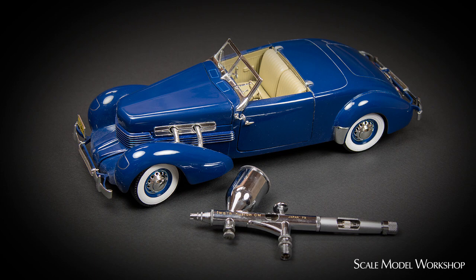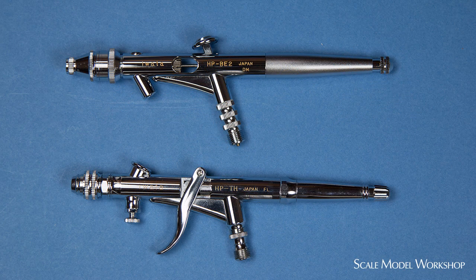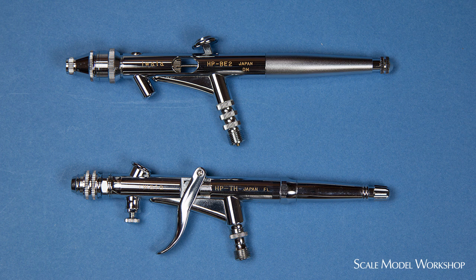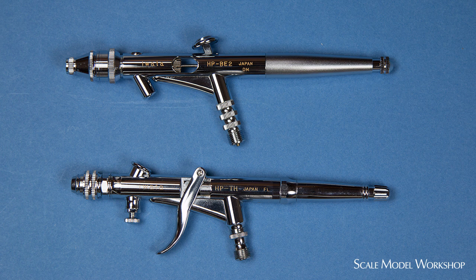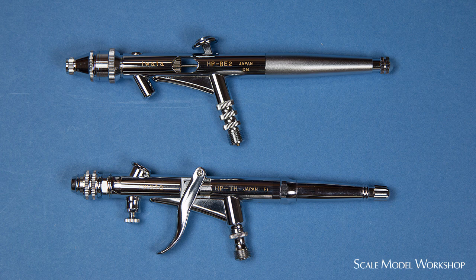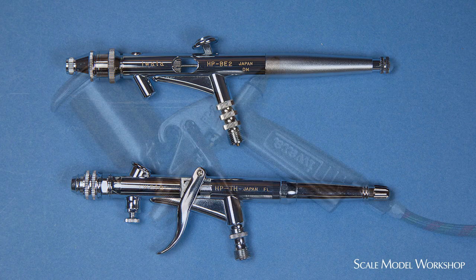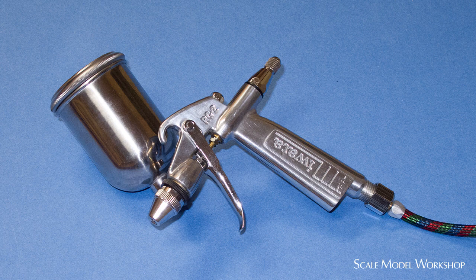Smooth application of paint over a broad area requires a different sort of airbrush. Here are a couple of my favorites, the Iwata HP BE-2 and the Iwata Custom TH. The HP uses a 0.8mm tip and the TH uses a 0.5mm tip. But my all-time favorite is the Iwata RG-2 with a 0.6mm tip.